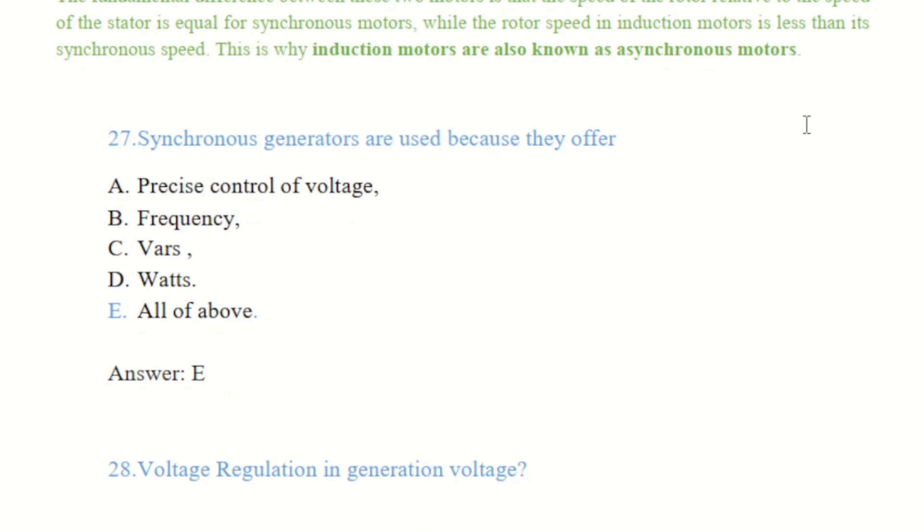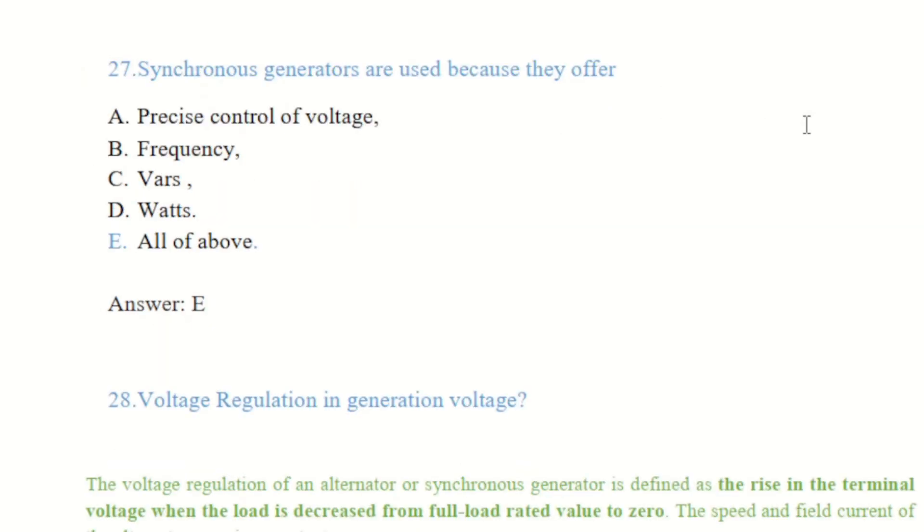Synchronized generators are used because they offer, in question number 27, A is precious control of voltage, B is frequency, C is volts, D is volts, E is all of above. These all are the part of the synchronized generators are used. Answer is E all of above.